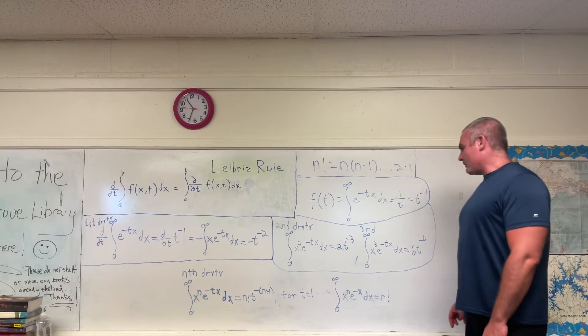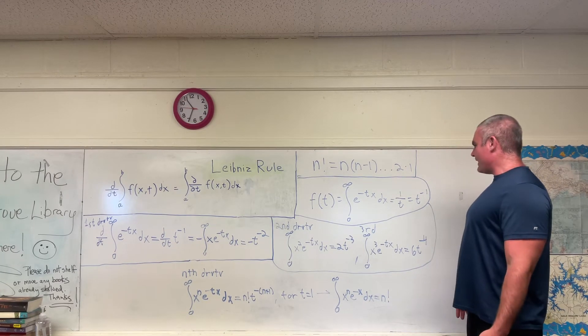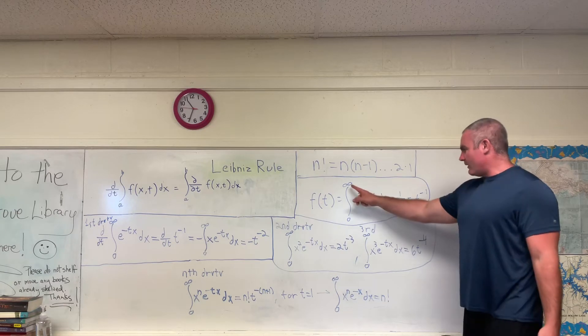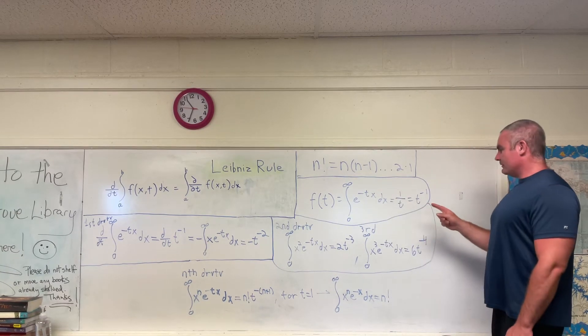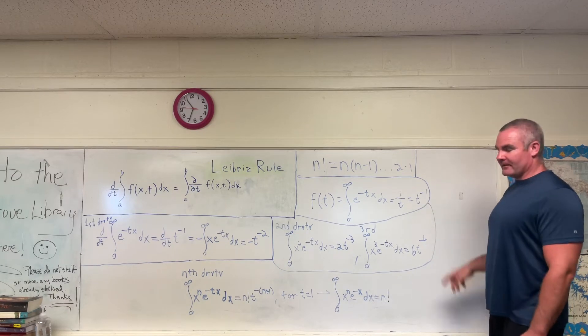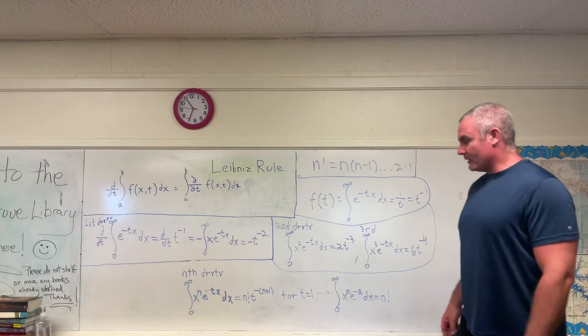Okay, so now that we have that, you would agree that if you took the derivative of this function of t right here, it would be equal to the derivative of t to the negative 1. Because they're equal, therefore their derivatives are equal.